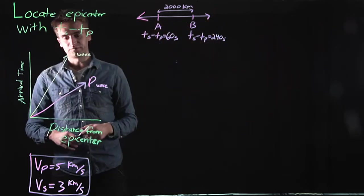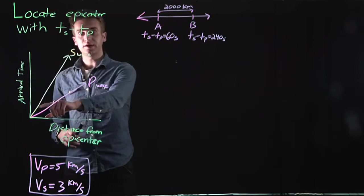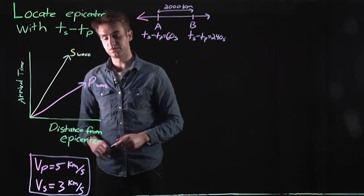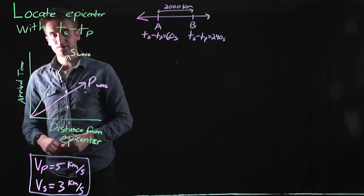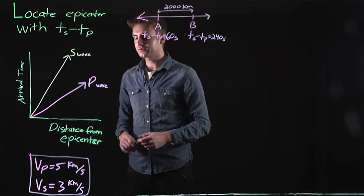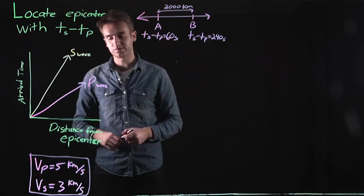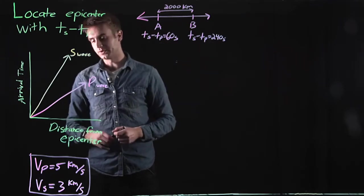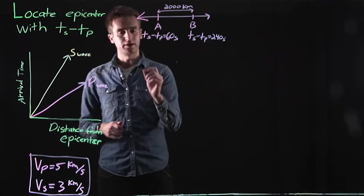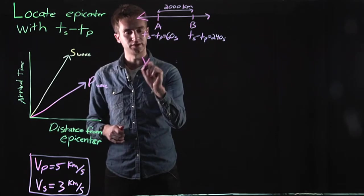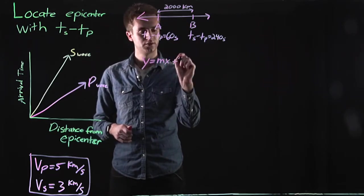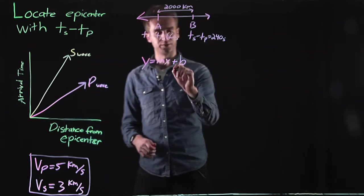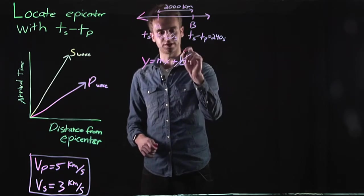Let's come over to this graph. I've plotted a line describing the S wave and a line describing the P wave. The x-axis is the distance from the epicenter, and the y-axis is the arrival time. The equation of a line is y equals mx plus b. Because our y-intercept is zero, we can drop the b.